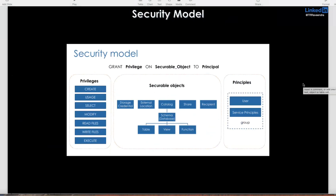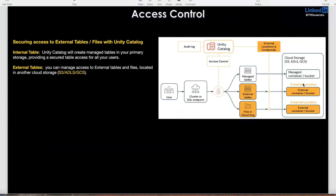You can control all these objects based on your role. Administrators give access depending on your role — whether you are a developer, a BI user, a reader, or a business user. When controlling access to internal tables or external tables — where external locations may be Azure Data Lake Gen2, AWS S3, or Google File System — for any cloud storage, we need to create credentials and external locations. We need external locations for external tables or for directly accessing files from external locations, so we need external locations and storage credentials.